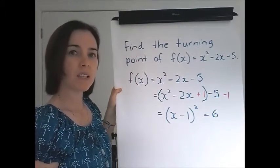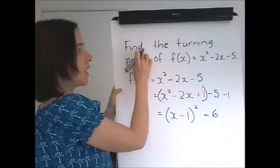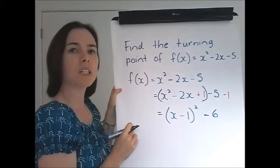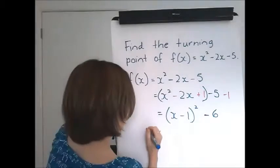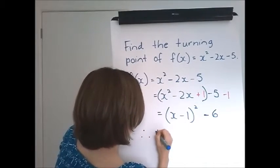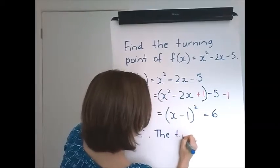Now we've completed the square there, but this time we're asked to go a bit further. We need to find the turning point. And it's in the perfect form to find the turning point. Therefore, the turning point, and that abbreviation is okay, is...